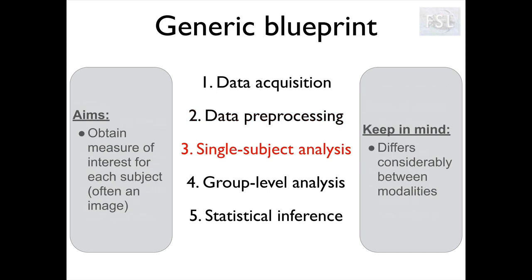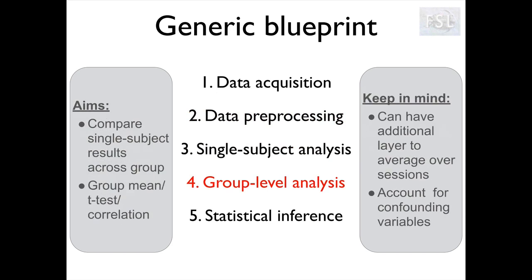Single subject analysis is the step that gives us a measure of interest per subject and it will be different depending on the modality we are using. In our case, most of the time the output is an image of that single subject measure, for example a grey matter map or a single subject activation map. Once we have extracted our single subject measures, we can run a group level analysis to compare these measures across subjects. We may want to derive a group map, compare groups, or study the correlation with another variable of interest.